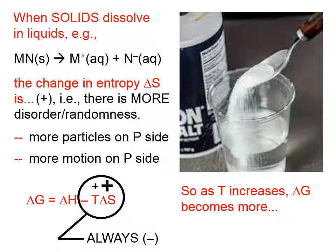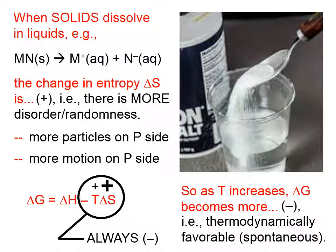As T gets bigger, what's going to happen to this quantity that I've circled? As T gets bigger, it's going to become a more negative quantity, which is going to tend to make delta G negative. That is, thermodynamically favorable, or spontaneous.